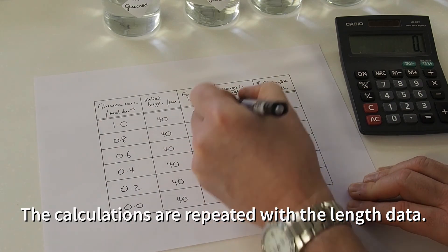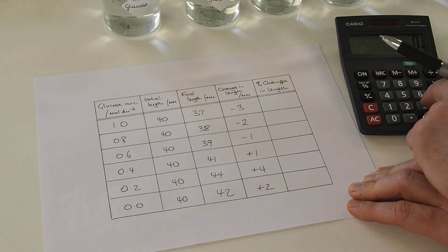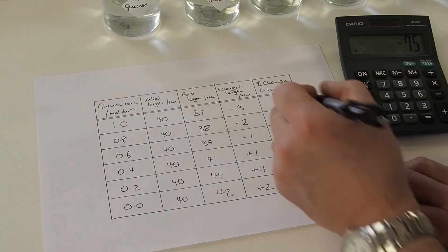We can do all the same calculations with the length data, and once again, if the block gets smaller, we'll have a negative change, and if the block gets larger, we'll have a positive change.